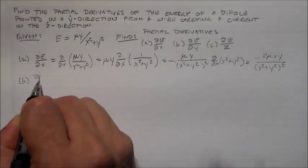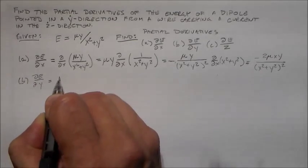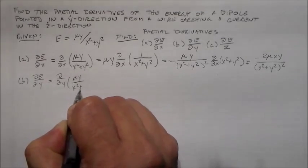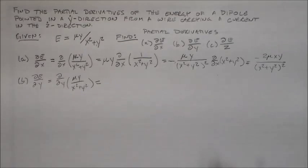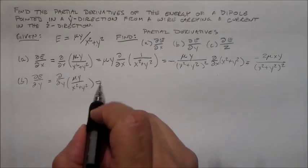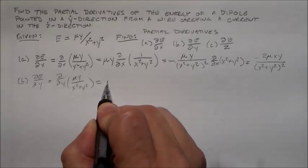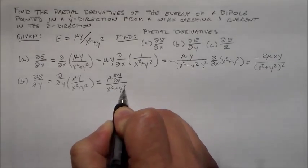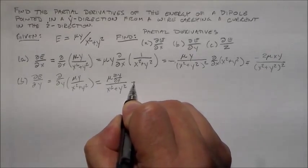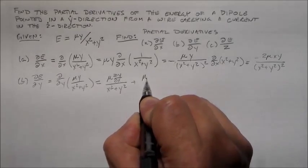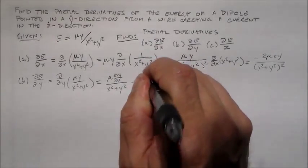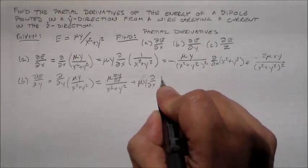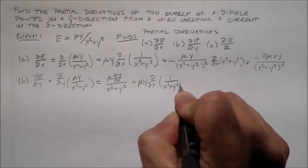And we could do the same thing with the y direction, in fact we're supposed to. So d/dy μy over x squared plus y squared. Now we've got two parts to this. We have μ dy/dx over x squared plus y squared plus μy times d/dx 1 over x squared plus y squared. Awesome.